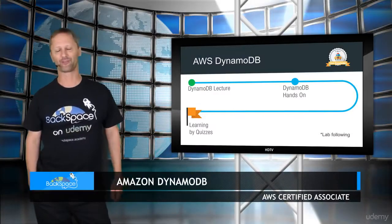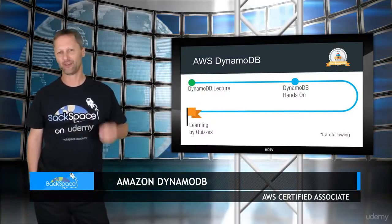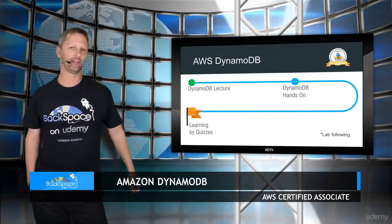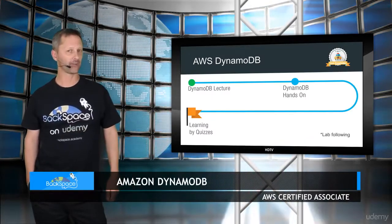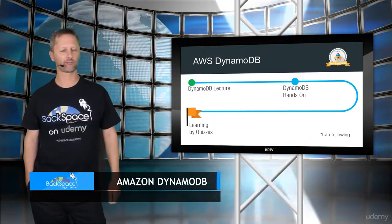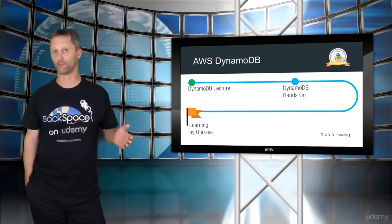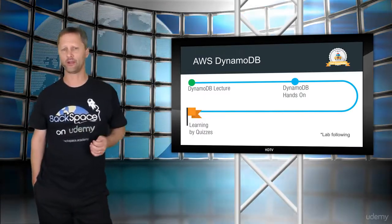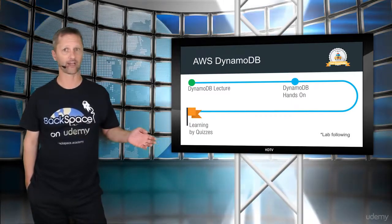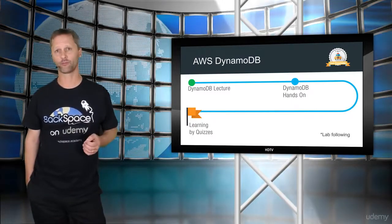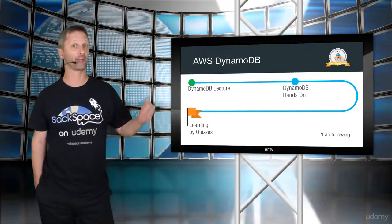Welcome back to Backspace Academy. DynamoDB is AWS's NoSQL database as a service. We'll look at how it differs from a SQL database and how it differs from the relational database service, from the perspective that it is a more abstracted service.